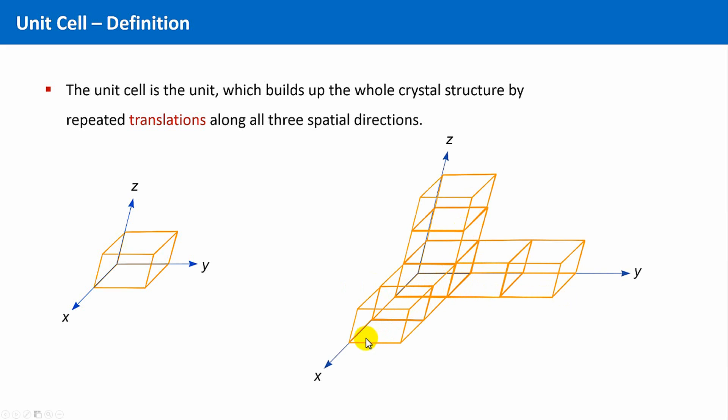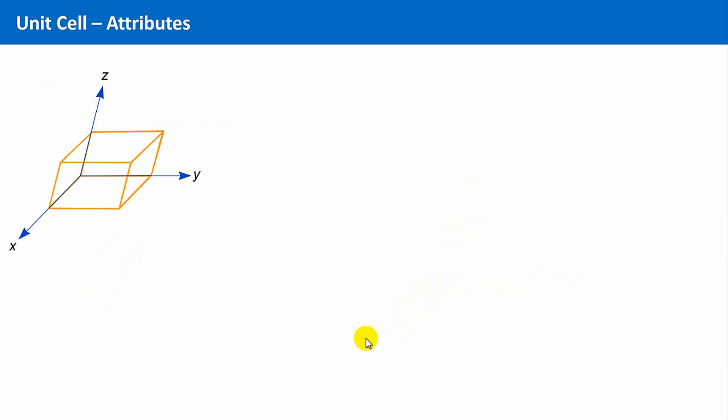Such a unit cell is characterized in the first instance by its so-called metric. The metric are the lattice parameters, and we need six of them to unambiguously define its dimensions.